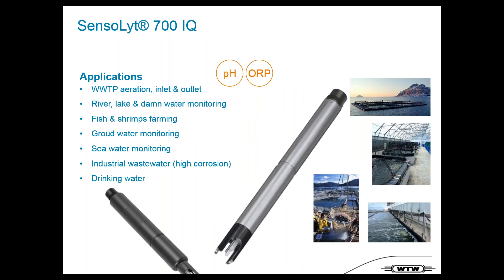We also have pH measurement with the Sensolite 700 IQ, with a wide range of applications: wastewater treatment plant aeration, inlet and outlet, river, lake and dam monitoring, fish farming, shrimp farming, groundwater, and seawater monitoring. It is also suitable for industrial wastewater and high-corrosion areas, where a special protected version is available, and also for drinking water.